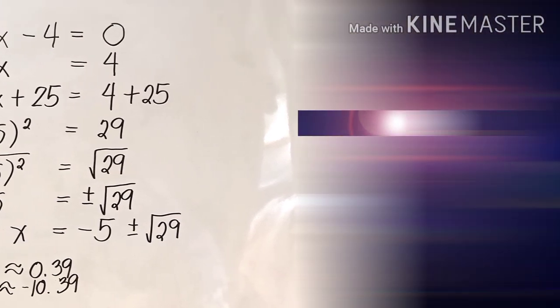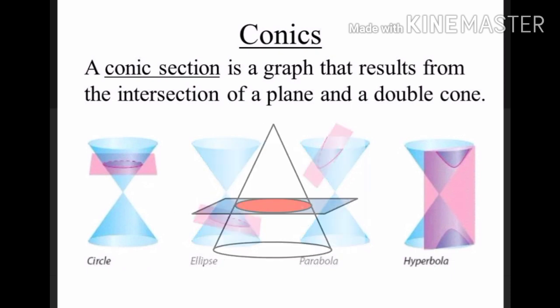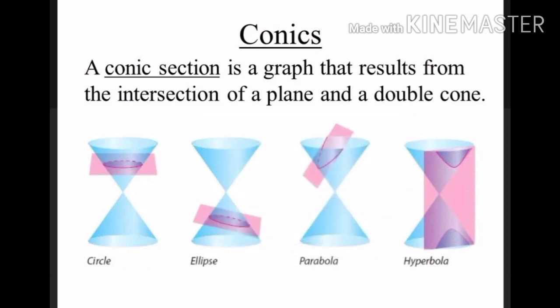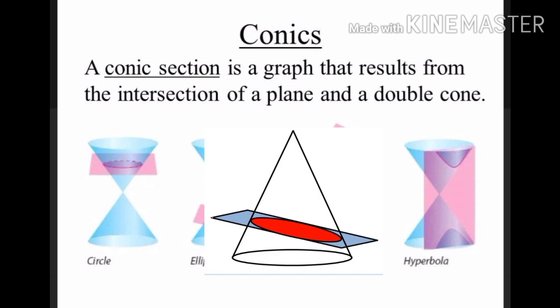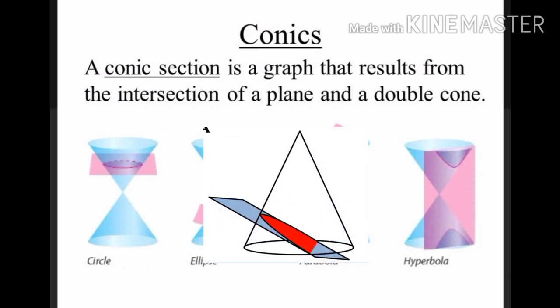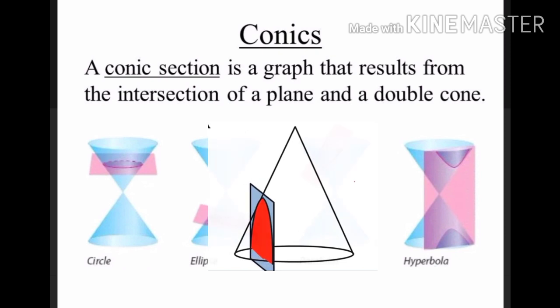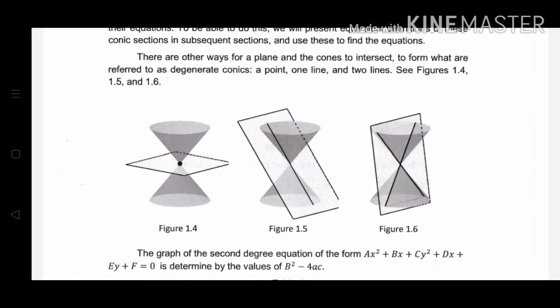With this review, we can now proceed to the main topic, the conic sections. A conic section is a graph that results from the intersection of a plane and a double cone. A circle is formed when the plane is perpendicular to the axis of the cone. An ellipse is formed when the tilted plane intersects only one cone to form a bounded curve. A parabola is formed when the plane is parallel to a generator line of the cone. A hyperbola is formed when the plane intersects both halves of the cone and is not parallel to a generator line. Degenerate conics include a point, one line, and two lines.